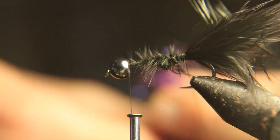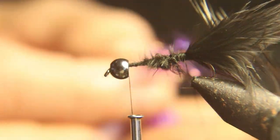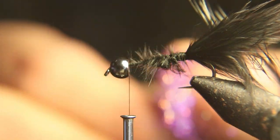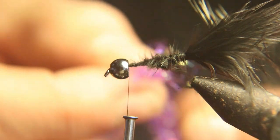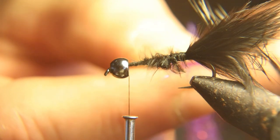I wanted to tie a black woolly bugger with purple chenille, but I don't have any purple chenille. So this is what we're going to do. We're going to make a dubbing loop—make a big loop—and I'm going to put the purple UV dubbing I have inside that loop.